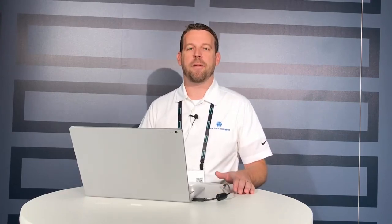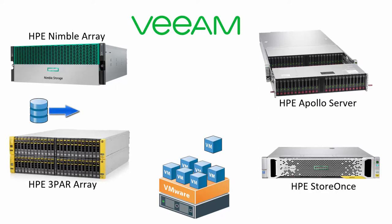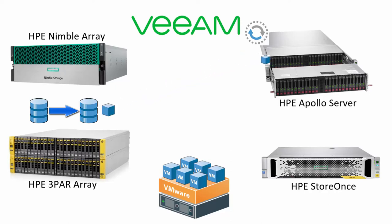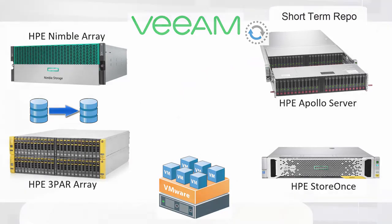So here's the full workflow. We take a VMware-level snapshot of our virtual machines, then instruct the Nimble array to take a SAN-level snapshot. At that point we can delete the VMware snapshots so VMs are no longer running on a .0001 VMDK file. We pull all our backup bits from that SAN snapshot, send it over our storage network — Fiber Channel or iSCSI — to the HPE Apollo 4000 series server, sitting on our ReFS repository. That primary backup holds maybe one to two weeks of data. If we need instant VM recovery, it's running from those 56 spindles, giving fast response times and fast application-level recovery restores.